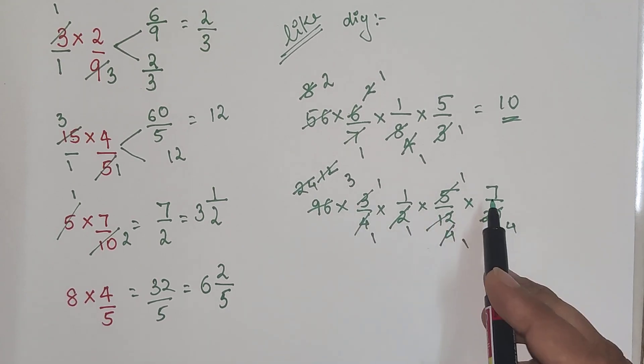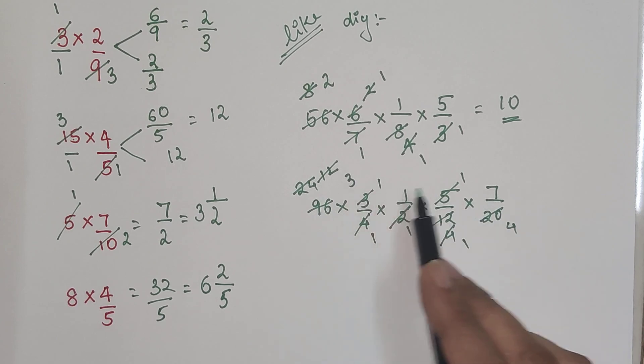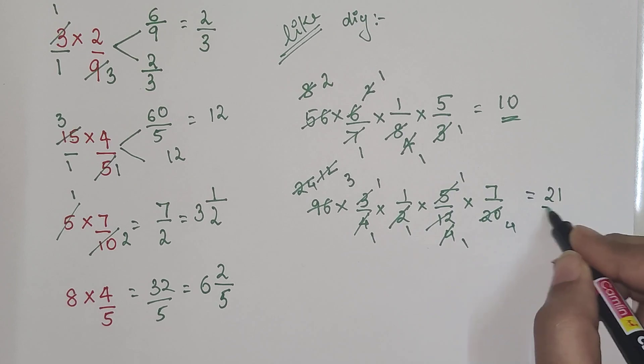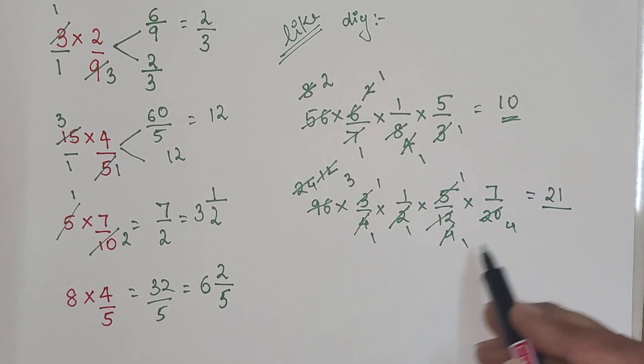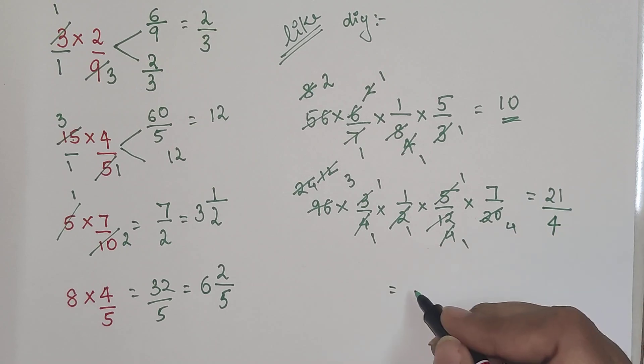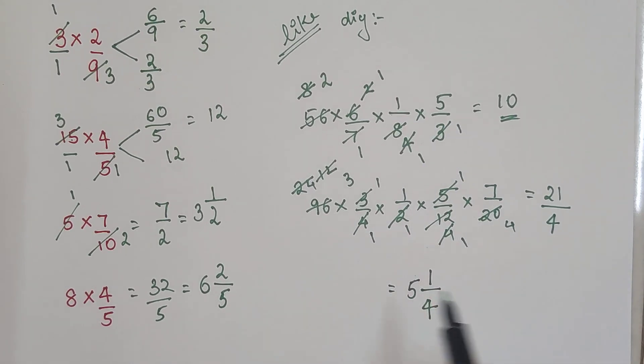So we will just do the final multiplication. This is nothing but 3 into 1 into 1 into 7. That is nothing but 21 upon 1 into 1 into 1 into 4. That is just dividing by 4. So again now this is an improper form. So we will divide 21 by 4. The quotient which we get is 5. Remainder is nothing but 1. And your divisor is 4. So this is your answer for this particular multiplication.